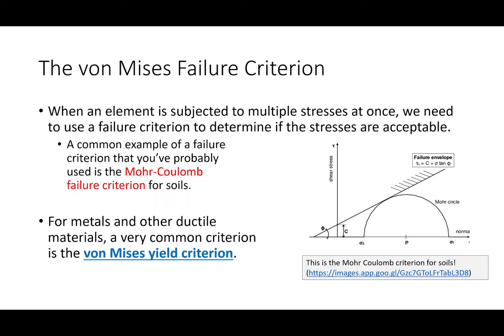The Mohr-Coulomb failure criterion comes from soil mechanics or geotechnical engineering — it assesses whether an element of soil has failed based on normal stress, shear stress, cohesion, and angle of internal friction. You define a failure envelope and determine whether the stress state is above or below it. That criterion works fine for brittle materials like soils, but it does not work for ductile materials like metals. That's why we use the von Mises criterion for steel.